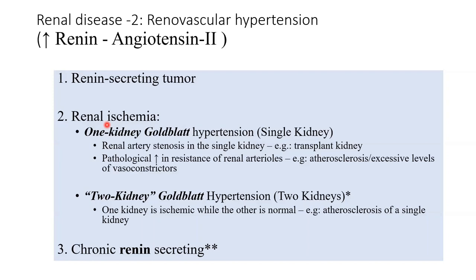Additionally, renal ischemia will cause renin secretion — you should now be able to work this out. Renal ischemia causes renin secretion, which causes angiotensin 2 formation, which adds to the woes of this patient. It causes vasoconstriction and, through the aldosterone pathway, even more sodium and fluid retention. All of this together causes or exacerbates hypertension.